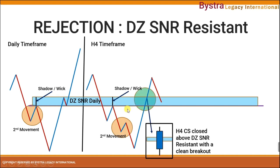We can see clearly that at the H4 time frame, the candle has broken this zone with a marubozu. The candlestick has broken above the danger zone SNR daily resistance. So the H4 candle closes above it. Once it closes above the zone, we need to know what to do next.